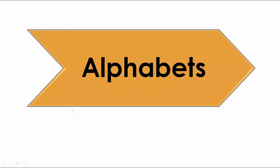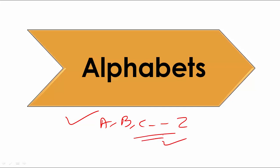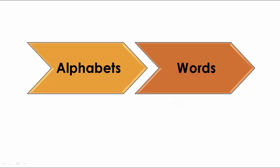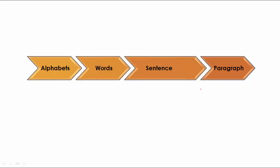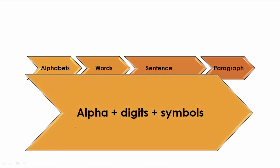First, why do we need variables, constants, and keywords? Let's take an example in English language. We have alphabets, for example A to Z. Using them we can create words — for example, 'apple' is a word, 'ball' is a word. Using words we can create sentences in English language.